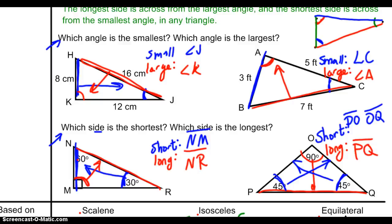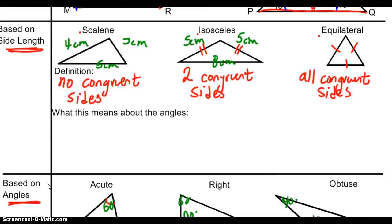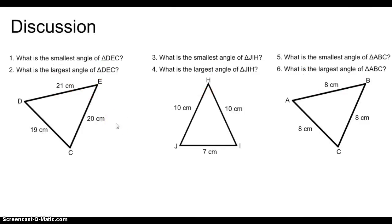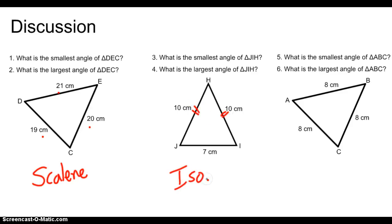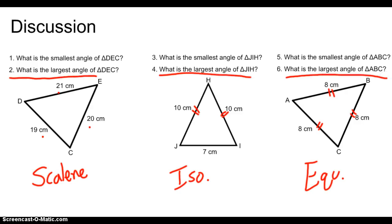That's interesting how things tie like that. Maybe we could use this theorem that we just learned and apply it to the different kinds of triangles. Take a look at these three triangles. The first one has three different side lengths, so we'd call it scalene. The second one has two of the same side lengths, so we'd call it isosceles. The third triangle has three congruent sides, so we'd call it equilateral. Pause the video and see if you can figure out what the smallest and largest angles of each triangle are going to be.